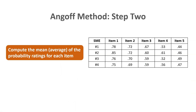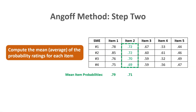For step two of the Enghoff method, we compute the mean — or average — of the probability ratings for each item. The mean probability for item one is 0.79, for item two it's 0.71, for item three it's 0.61, for item four it's 0.56, and for item five it is 0.47.